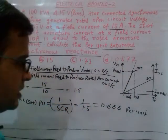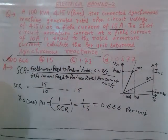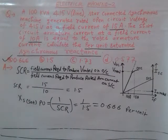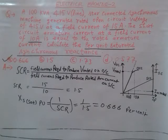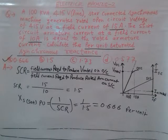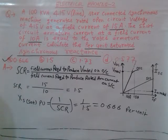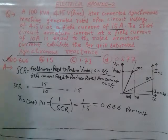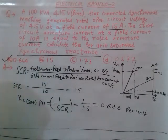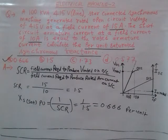Normally, in the case of turbo alternators, the value of SCR is in the range of 0.45 to 0.9. In the case of hydro alternators, the short circuit ratio SCR may be in the range of 1 to 1.5. Since SCR is a ratio it is a dimensionless number, and higher SCR means the machine will be more transiently stable.